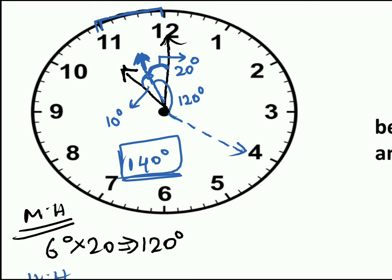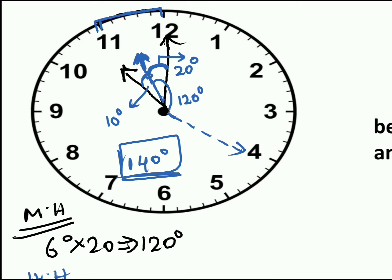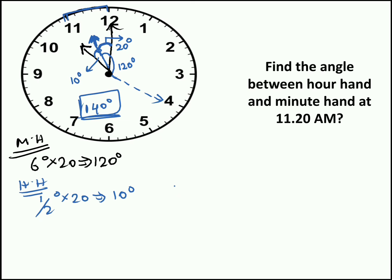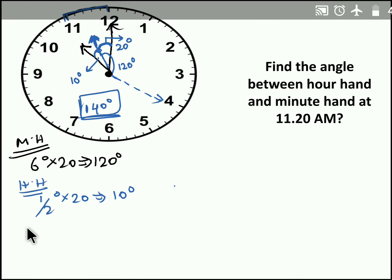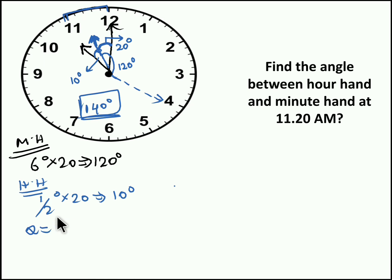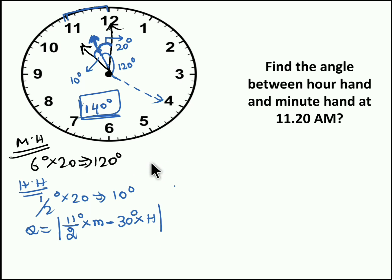You might feel this process is a little complex, but there is a short trick to solve this type of problem in less than 30 seconds. The formula is: theta equals the modulus of (11/2 × minute hand value) minus (30 × hour hand value). Let me show you how to use this formula to find the angle between the two needles quickly.